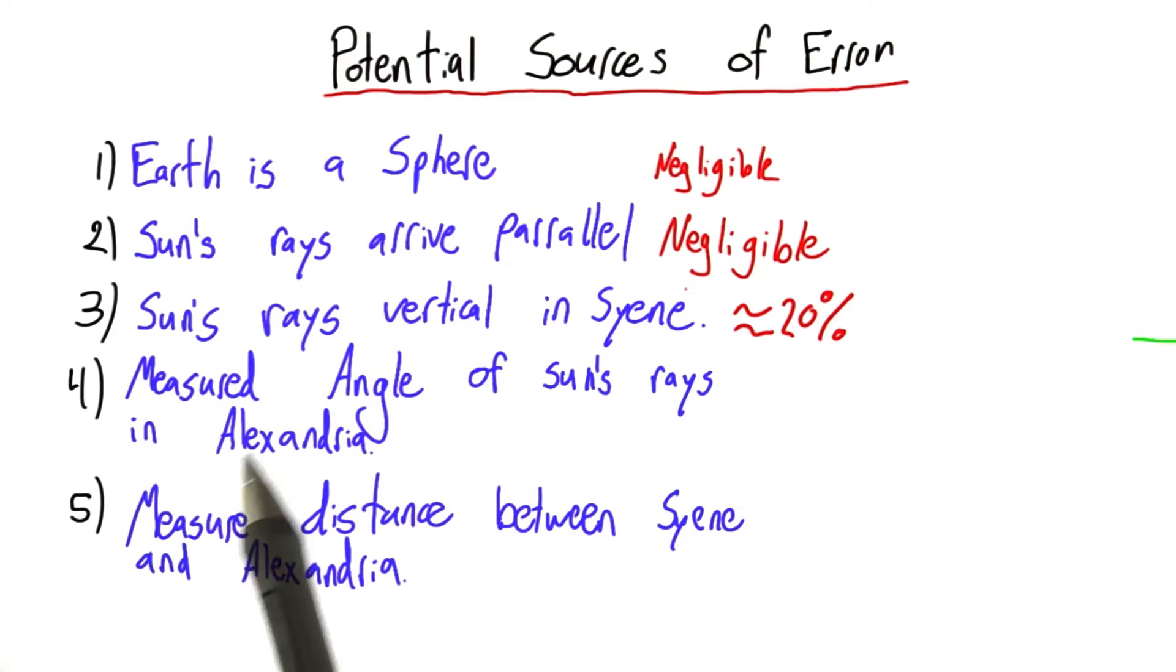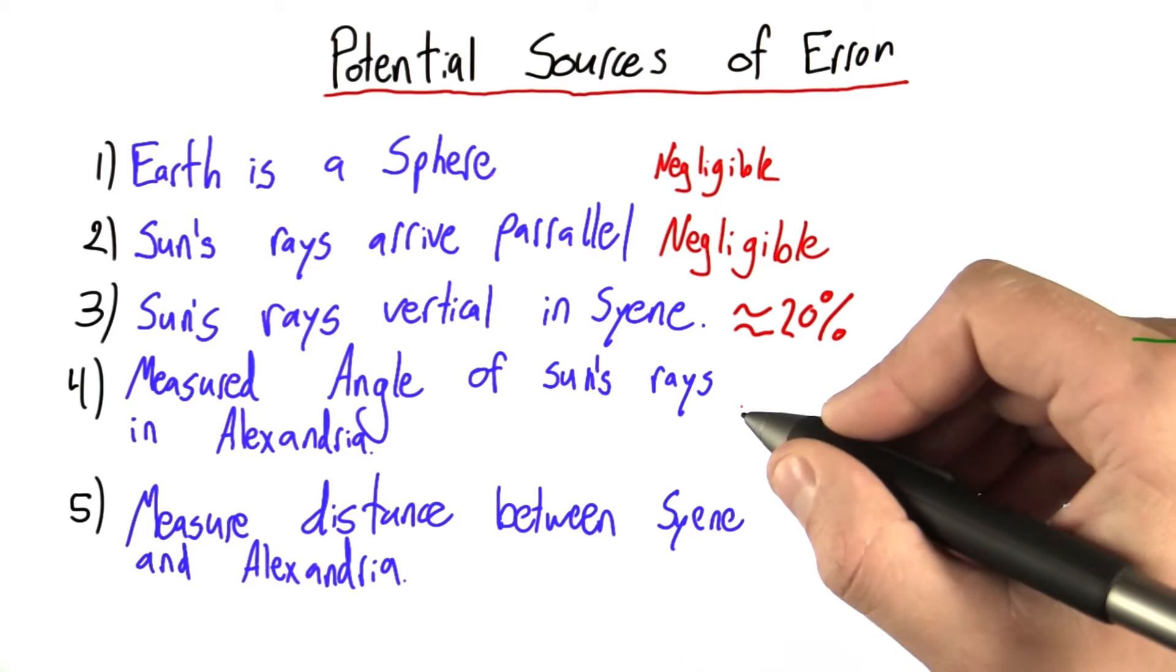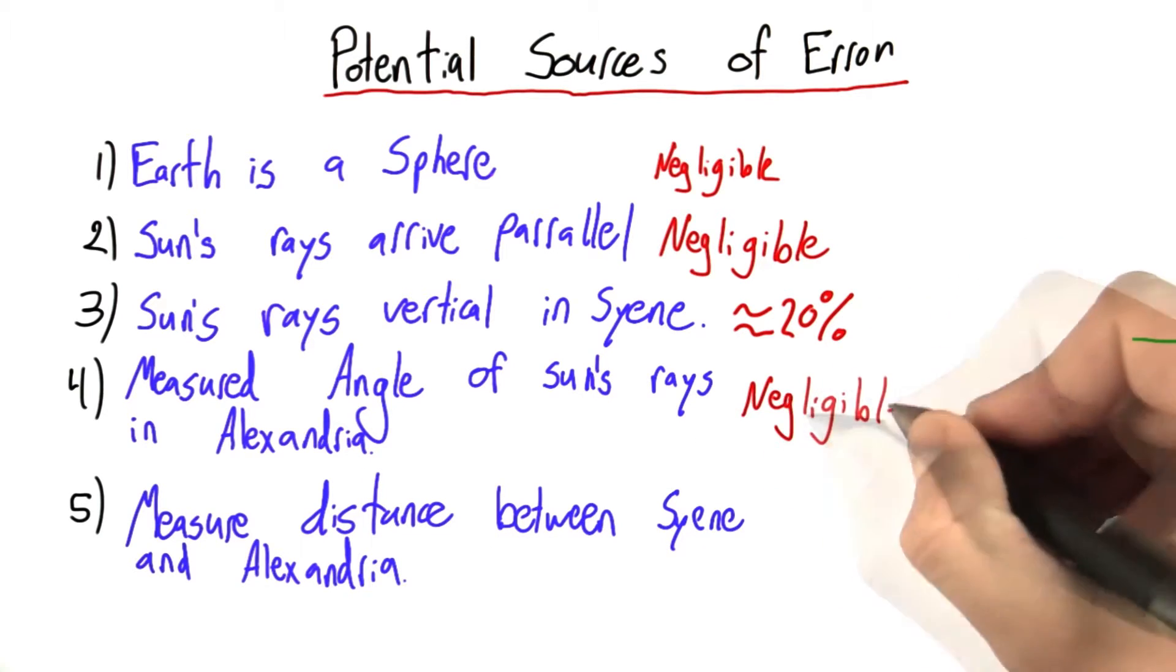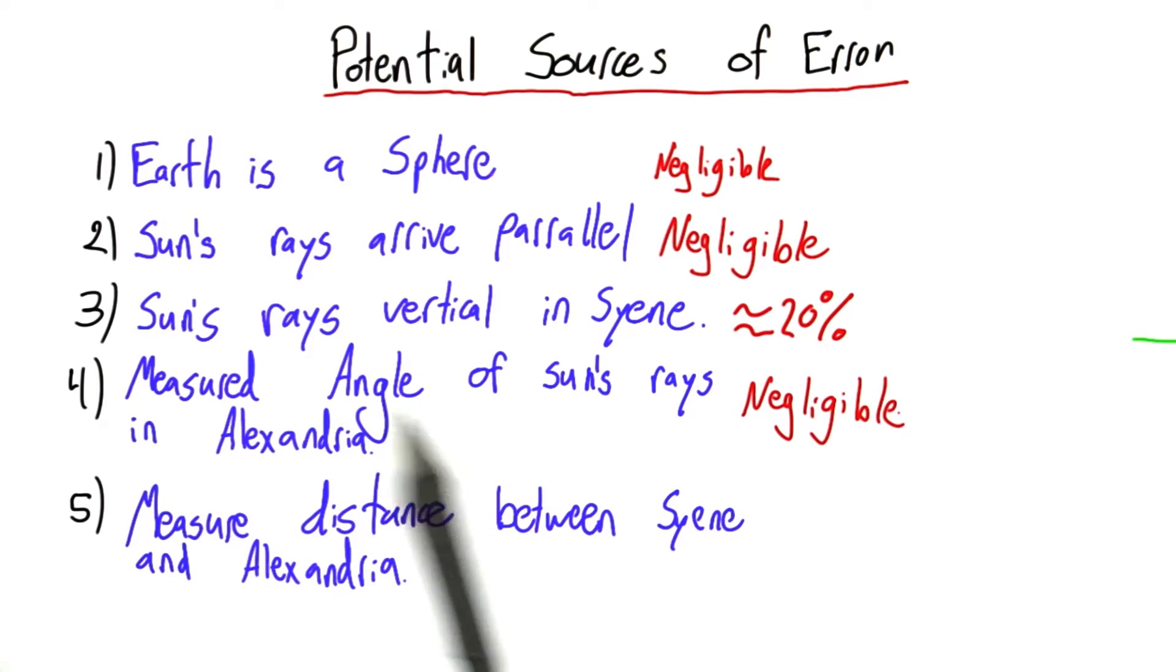We've determined that measuring the angle of the sun's rays in Alexandria can be done as precisely as we'd like, and so this error is negligible, which is interesting. You may not have thought that this actual measurement seems more difficult than just verifying something is vertical, but it turns out this was the negligible one, and this could introduce about 20% error.